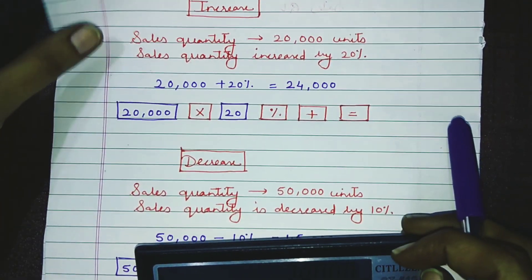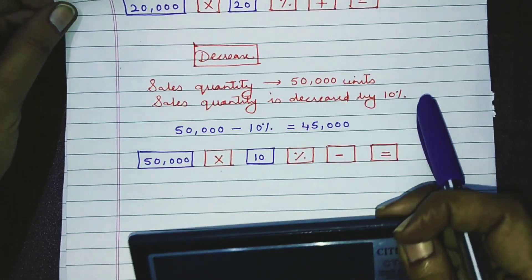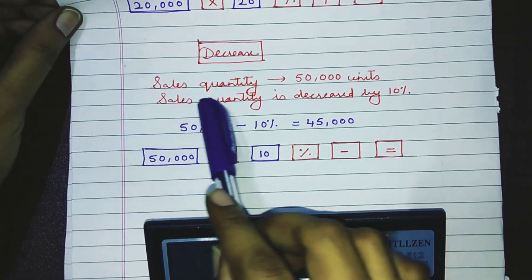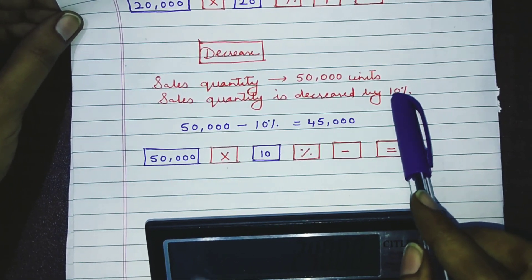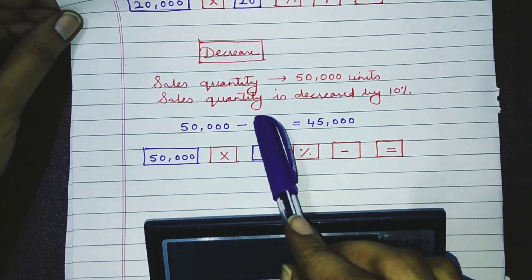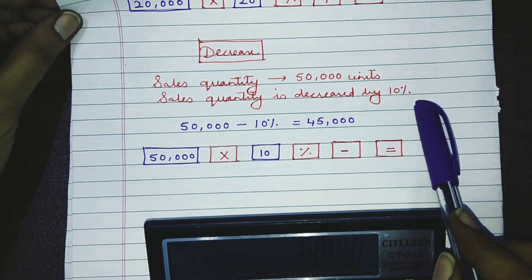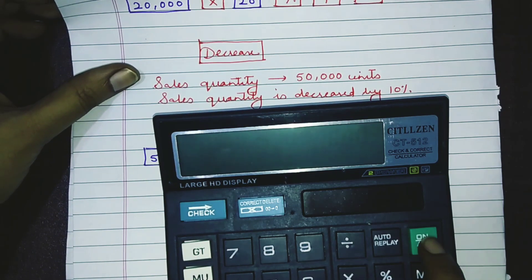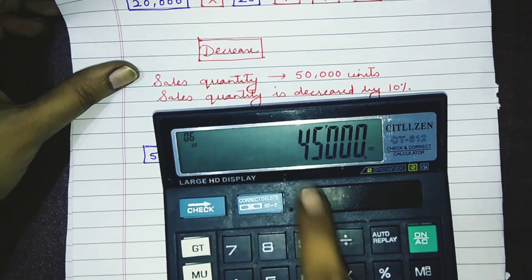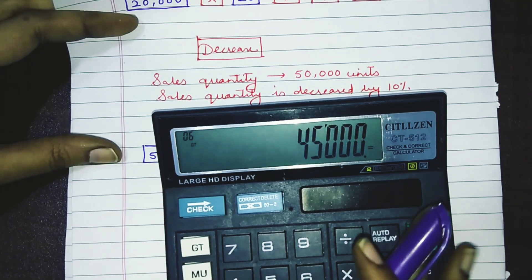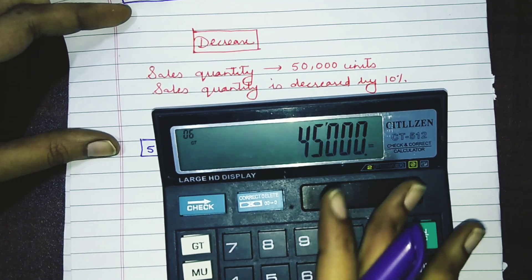Now, what to do for a decrease? Suppose they have given you a sales quantity of 50,000 units and instructions that the sales quantity is decreased by 10 percent. With the help of the simple calculator, you can easily do that calculation — the new revised quantity will become 45,000.